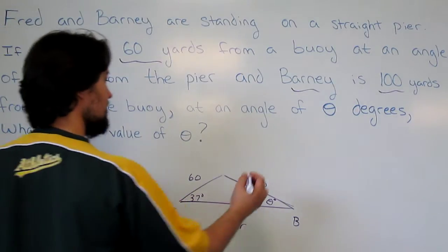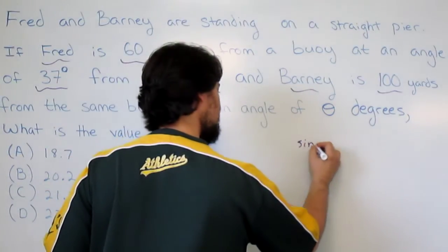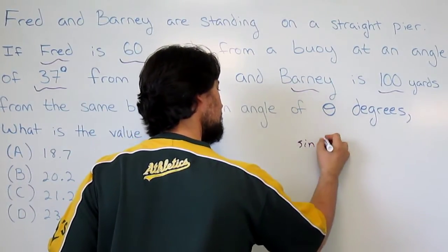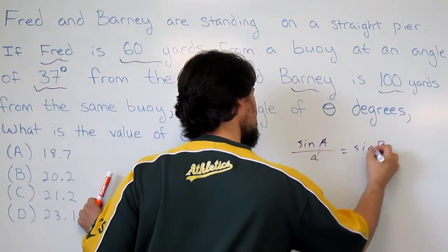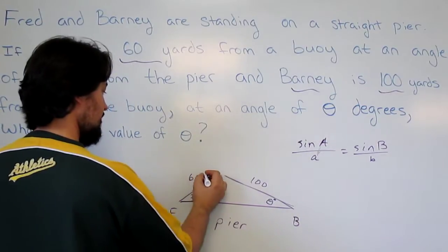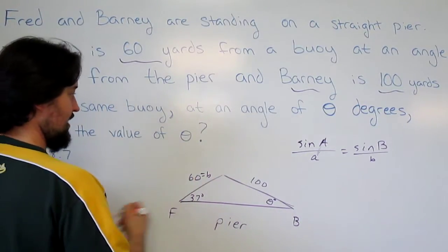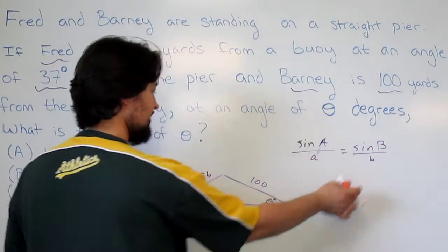All right, let's apply law of sines. We have sine of angle A over little a equals sine of B over little b. Let's call this big B, call this little b. I will call this A as well, instead of calling it angle Fred over side Fred.